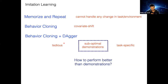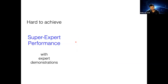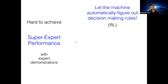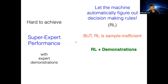We looked at how we could reduce tediousness by leveraging privileged information. But let's pause and consider suboptimal demonstrations: how can we perform better than the demonstrations given? If we just have expert demonstrations, it can be hard to go beyond the expert. But instead of relying only on experts, we could use reinforcement learning to automatically figure out decision-making rules — however, RL is sample inefficient. This motivates using RL plus demonstrations together.